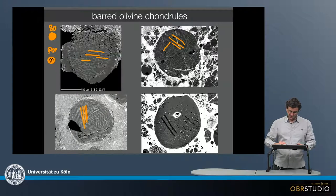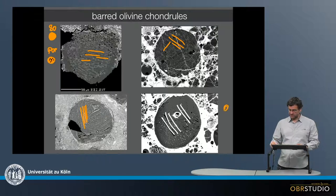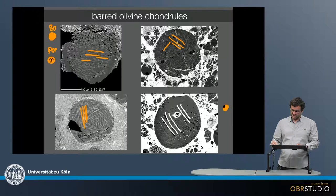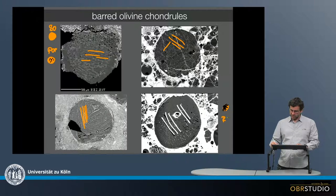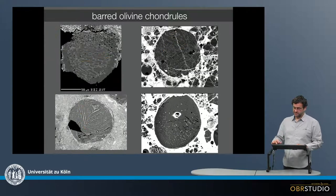There are also chondrules with bars, but in this case the bars are pyroxene — so this is not a barred olivine chondrule anymore. When there was a melt that was more silicon-rich and this was undercooled, then from a seed crystal, individual bars of pyroxene form very rapidly, and this is then a radial pyroxene chondrule. So this is another distinct type.